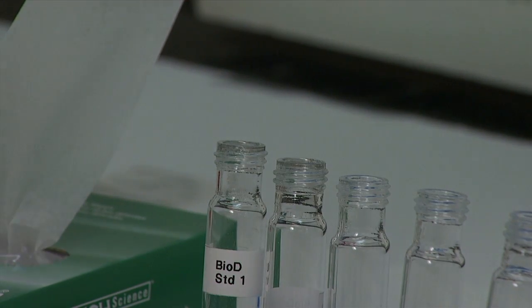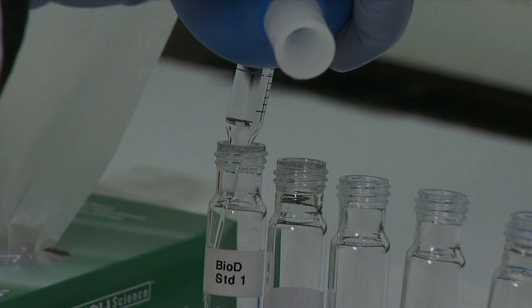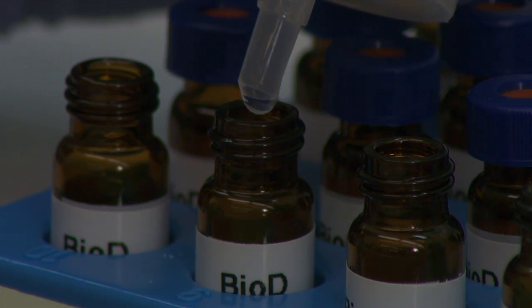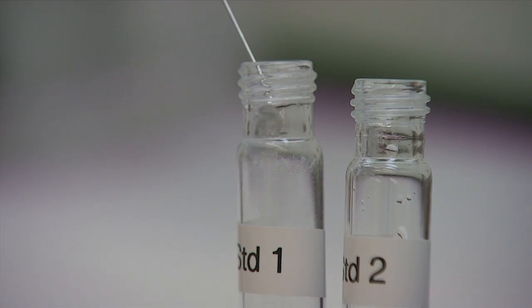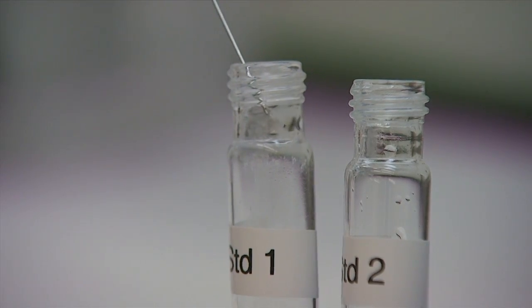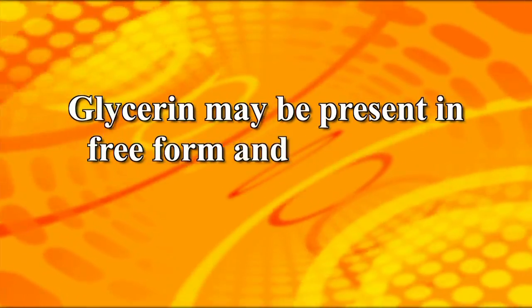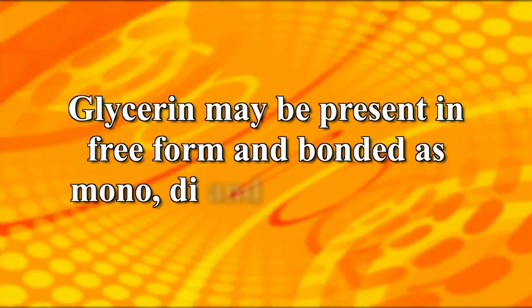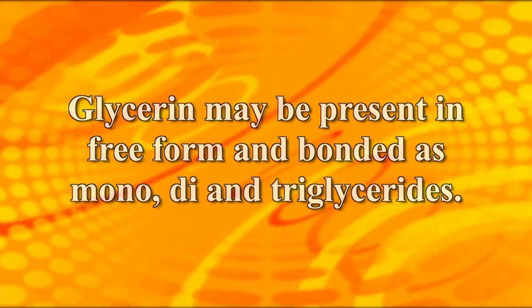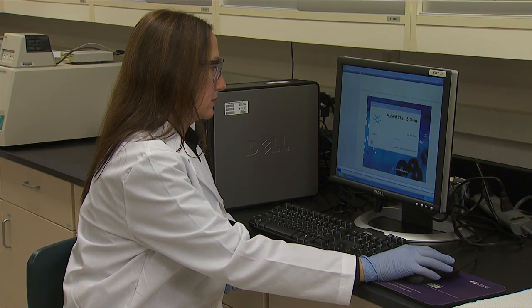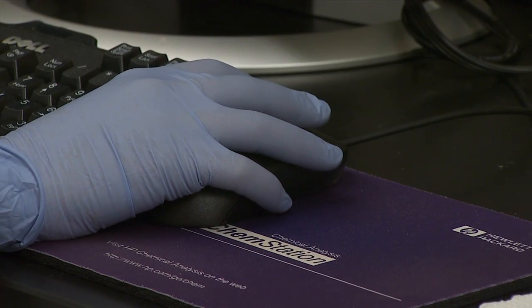Glycerin is a major byproduct of biodiesel production, a process called transesterification, where oils and fats are converted to fatty acid methyl or ethyl esters. Glycerin may be present in free form and bonded as mono-, di-, and triglycerides. Their amounts are an indication of the conversion reaction and biodiesel quality.